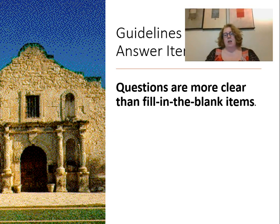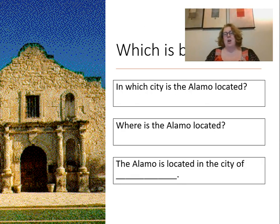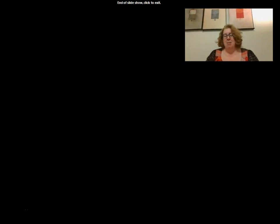Again, if we can make it a question rather than a fill-in-the-blank, we'll be so much better off — it's going to be less tricky. We want items to be difficult without being tricky. For example, 'What city is the Alamo located in?' is better than 'The Alamo is located in the city of blank.' That's how to write fill-in-the-blank questions. If you have any questions, please send me an email — I'm happy to chat. Have a great week!